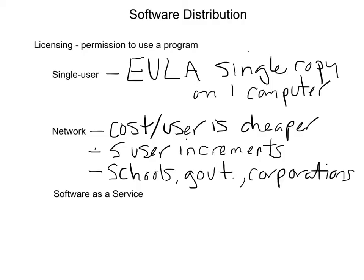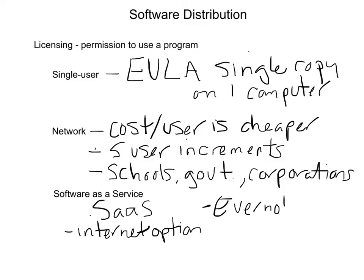The last method of distributing software is software as a service, often called SaaS. SaaS means you don't have to install anything on your computer — it's a web application, an internet option for using your software. Examples include Evermix, Dropbox, and Outlook for email. These are applications you don't necessarily need to install on your computer; you can just go to a website and use them.